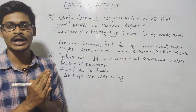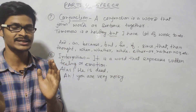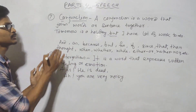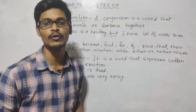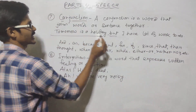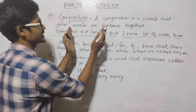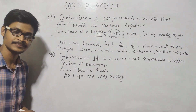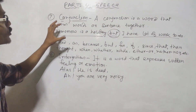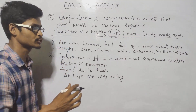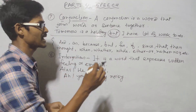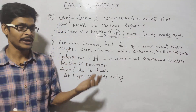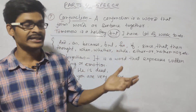Conjunction is a word that joins words or sentences together. For example, 'Tomorrow is a holiday, but I have a lot of work to do' — 'but' is the conjunction joining the two sentences. Common conjunctions include: because, but, for, if, since, that, then, though, when, whether, while, or, not.